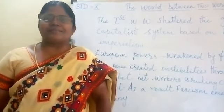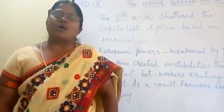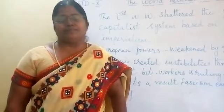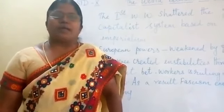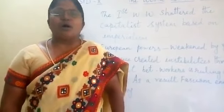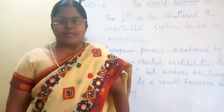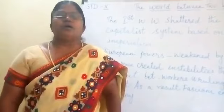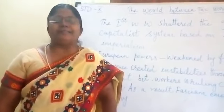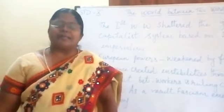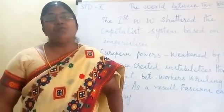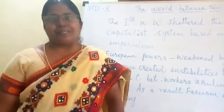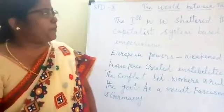As we saw in the first lesson, the First World War started in the year 1914 and ended in the year 1918. The Second World War started in the year 1939 and ended in the year 1945. So between these two world wars is what we are going to see in this lesson.